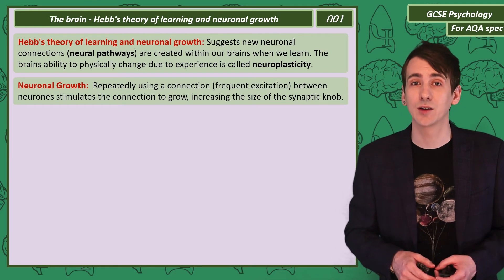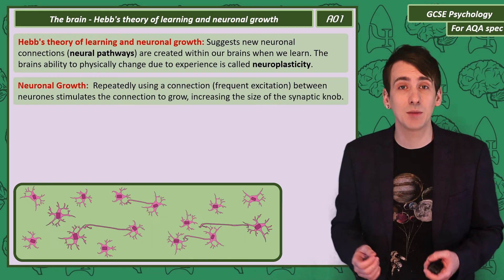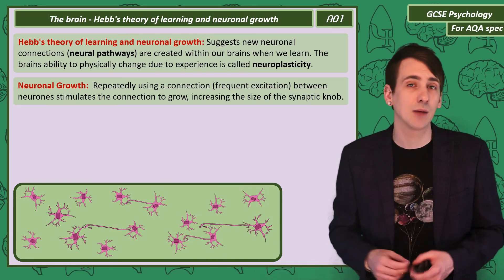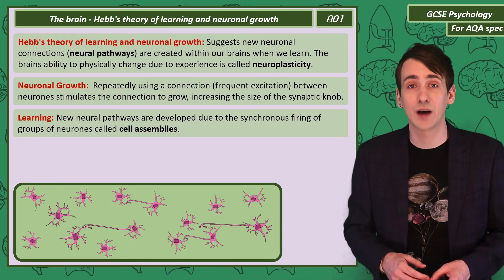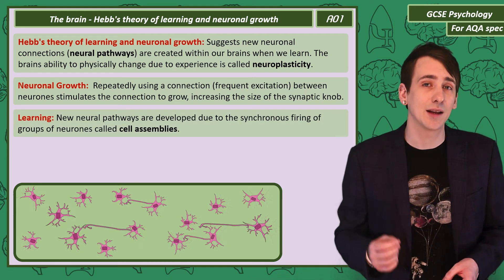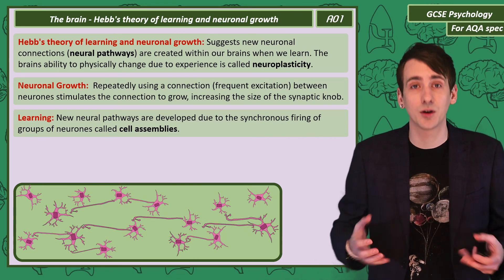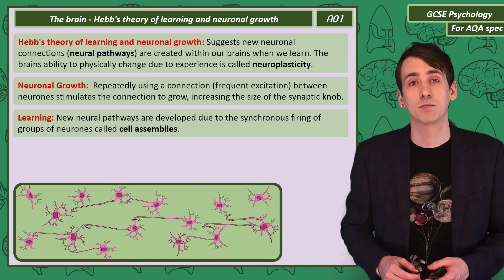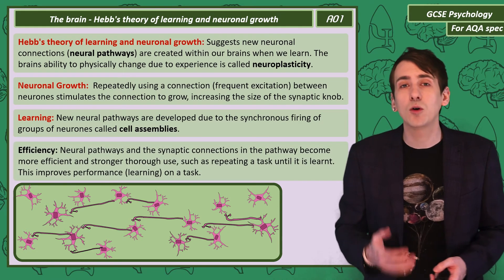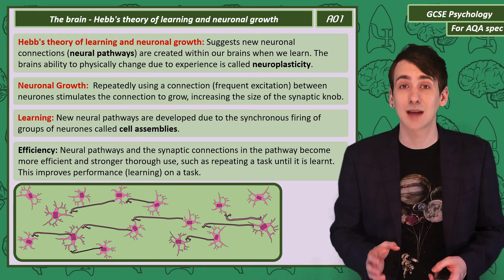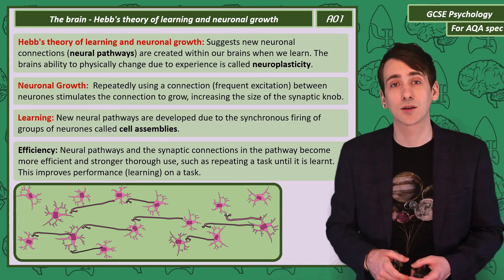Hebb argues that if we repeatedly use a connection, that is repeated excitation. That frequent excitation stimulates the connection, making their synaptic terminal grow. Collections or groups of neurons that fire together are called cell assemblies, and when we learn, new neuronal pathways are formed from their synchronous firing. The more neural pathways are used, the stronger and more efficient they become — this is a reason a task becomes easier or performance improves the more times it is repeated.